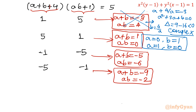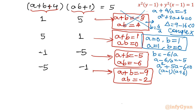Case 3: a + b = −5 and ab = −6. Write b = −6/a and substitute: a − 6/a = −5, giving a² + 5a − 6 = 0. Factorizing: (a − 1)(a + 6) = 0, so a = 1 or a = −6. If a = 1, then b = −6; if a = −6, then b = 1. All values are integers — valid solutions.